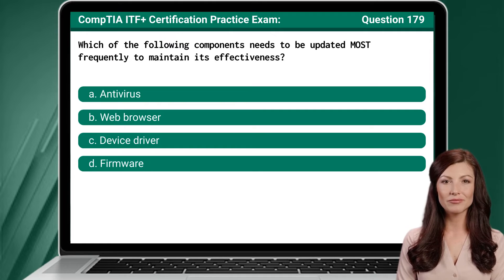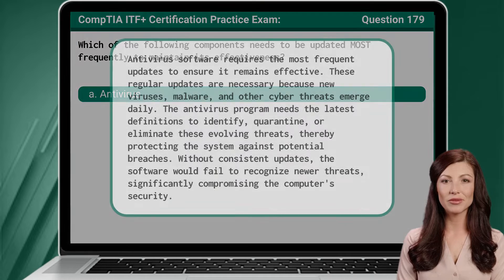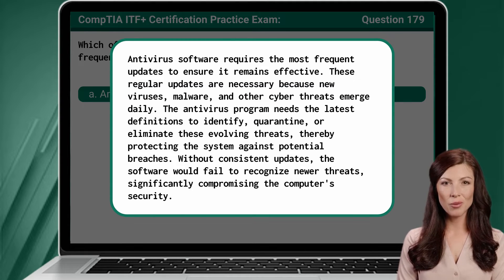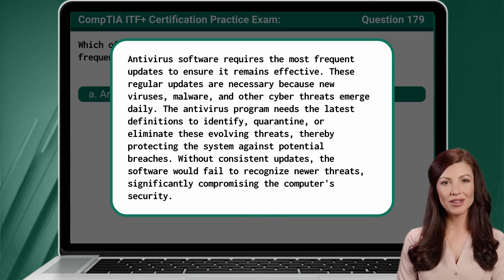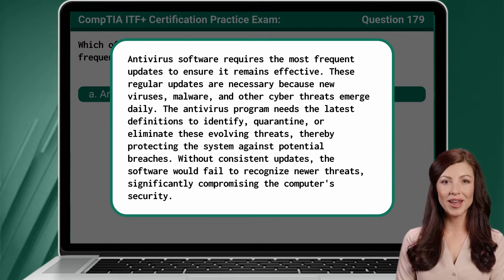Question 179. Which of the following components needs to be updated most frequently to maintain its effectiveness? The answer is A. Antivirus. Antivirus software requires the most frequent updates to ensure it remains effective. These regular updates are necessary because new viruses, malware, and other cyber threats emerge daily. The antivirus program needs the latest definitions to identify, quarantine, or eliminate these evolving threats, thereby protecting the system against potential breaches. Without consistent updates, the software would fail to recognize newer threats, significantly compromising the computer's security.